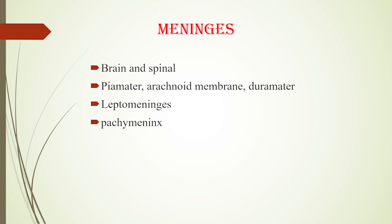The brain and spinal cord are enveloped by membranes called meninges. There are three meninges: pia mater, arachnoid membrane, and dura mater. Pia mater closely encircles the brain and spinal cord — we call it leptomeninges. The arachnoid membrane is in the form of a spider web, hence its name, and is also part of the leptomeninges. The outermost layer, the dura mater, is the toughest membrane and is called pachymeninges. The meninges of the spinal cord are called spinal meninges.